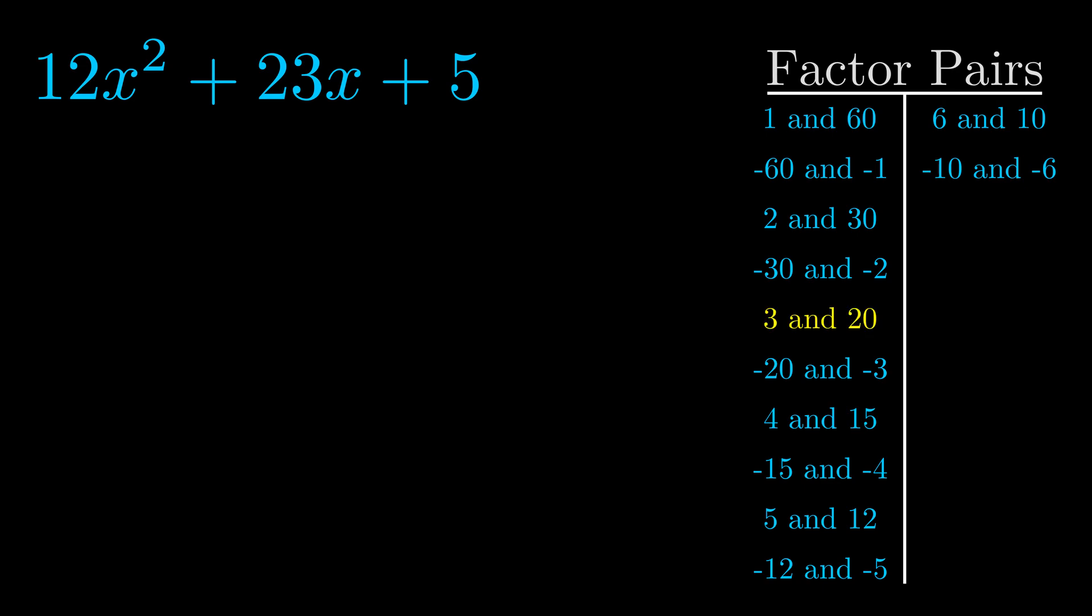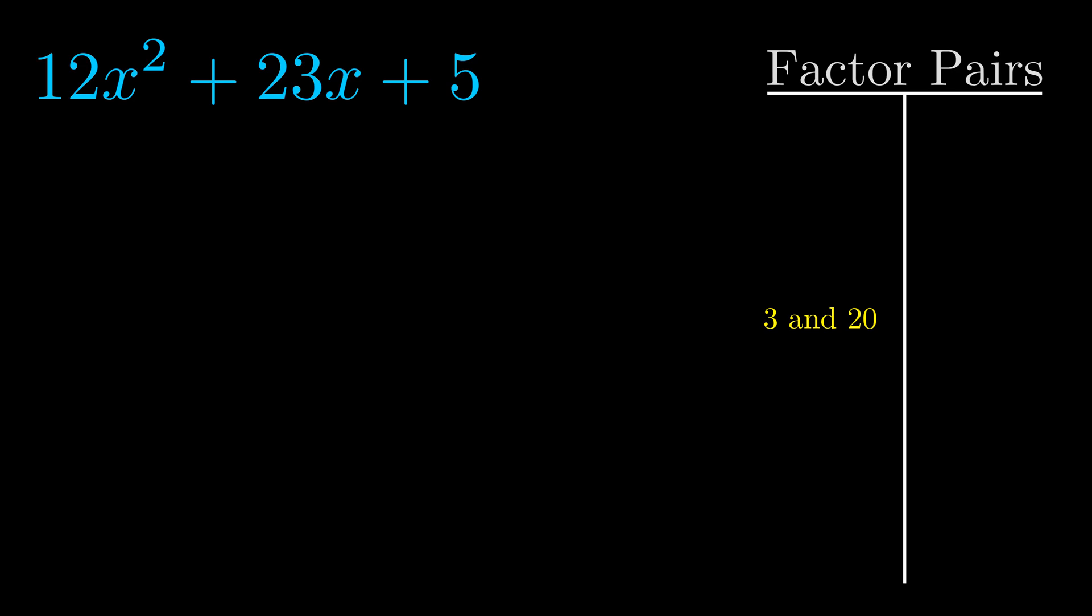And really this is the only factor pair that we need. Now once we have this factor pair, what we want to do is use it to split up the b value.